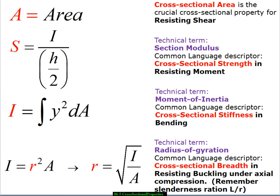Okay, so I want to talk about a collection of properties. And some of these I've mentioned already, but cross sectional area is the best indicator, it's the crucial cross sectional property for resisting shear force. Section modulus, the technical term is sectional modulus. We're going to try to call it cross sectional strength in resisting moment, just to give more meaning to the term. Then we have something called a moment of inertia, which we define as the integral of y squared dA over the cross section. We'll talk in a minute about what that means. But it's called the moment of inertia. That's a very poor term. There's no inertia involved. That's a term that was drawn by analogy to another field of study that was occurring at the time that this phenomenon was discovered. I like to call it the cross sectional stiffness in bending.